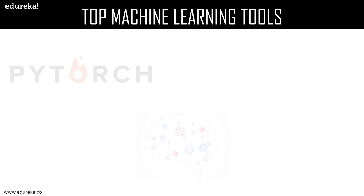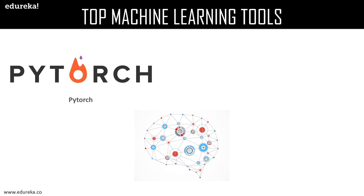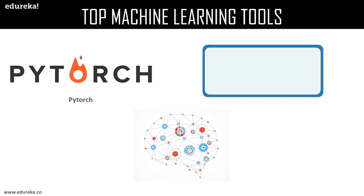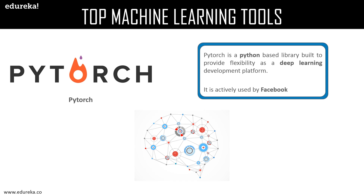Next we have PyTorch, one of the biggest rivals of TensorFlow. PyTorch is a Python-based library built to provide flexibility as a deep learning deployment platform. The workflow of PyTorch is as close as you can get to the Python scientific computing library NumPy. It is actively used by Facebook for all of its machine learning and deep learning work. Dynamic computation graphs are a major highlight of PyTorch, and support for CUDA ensures that the code can run on the GPU, decreasing run time and increasing overall system performance.